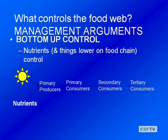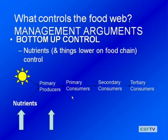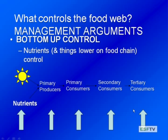Bottom-up control is management from the bottom of the food chain — managing the nutrient level to control the biomass of organisms. If we increased nutrients, we'd increase algae and primary producers, which might cause increased zooplankton, which might cause increased numbers of their predators, and that might cause increased numbers of fish. So one way to control algal blooms is to reduce nutrients. Or if you want to grow more fish, maybe you add more nutrients based on bottom-up control.